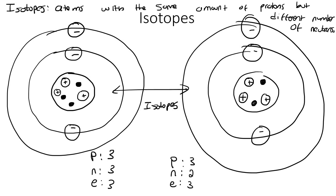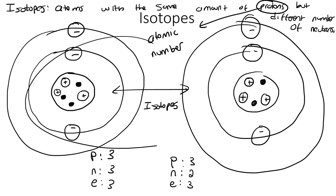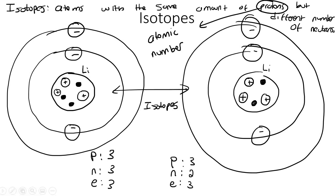Now I've got some challenge questions coming up, but just make sure that you've got that definition: atoms with the same amount of protons but a different number of neutrons. The number of protons helps us work out the atomic number, and that is also the number on the periodic table. So if the number of protons are the same, then these elements are the same — for example, this would be lithium, and this would also be lithium. So isotopes are the same element because they have the same amount of protons, but the number of neutrons is different.